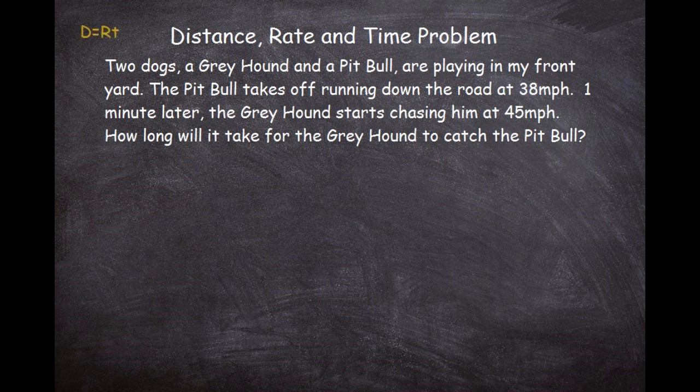The formula we need is d = rt, which is distance equals rate times time. This formula can solve any problem involving distance, rate, and time. For example, if you're going 10 miles per hour for two hours, you multiply 10 times 2 to get 20 miles. The distance is 20 miles — that's d = rt in action. Use this formula every time you see a distance-rate-time problem.